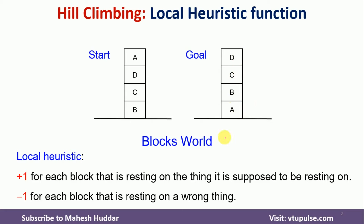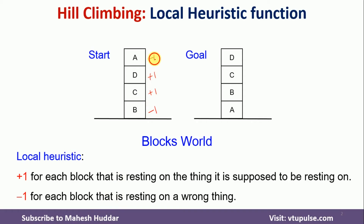If anything else is there — for example, in this start state, B is present on the ground but we are expecting A to be on the ground — so it will be given minus one. C is present at the correct position, so plus one. Calculating the values, we get minus one for A's position, plus one for C, plus one for another correctly placed block, and minus one for another. So the total value of this start state is zero.